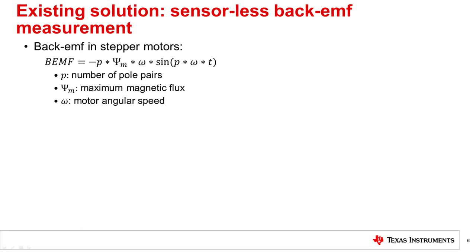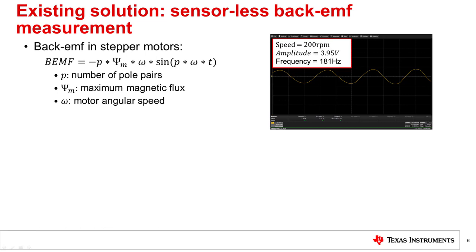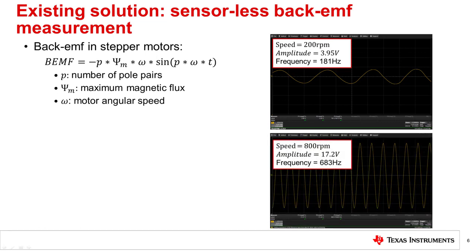To better visualize this, let's look at the back EMF waveform of a stepper motor for two different speeds. At 200 rpm, the back EMF amplitude is 3.95 volts and its frequency is 181 Hz. As the speed is increased by a factor of 4 to 800 rpm, the back EMF amplitude increases to 17.2 volts — almost four times larger than at 200 rpm. The frequency also increases by a factor of 4 to 683 Hz as expected. When the motor stalls, the back EMF goes to 0 volts since the motor speed is 0 rpm in a stall condition.